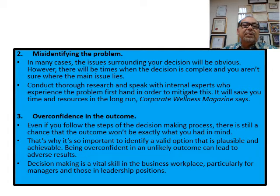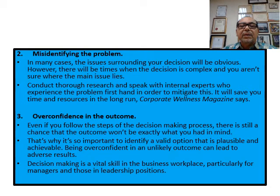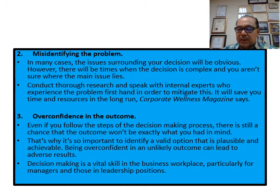Number three: overconfidence in outcome — some people say 'This is easy, we just take this decision' without going into detail to look carefully at the decision. They make the decision haphazardly due to overconfidence, which leads to a wrong decision.